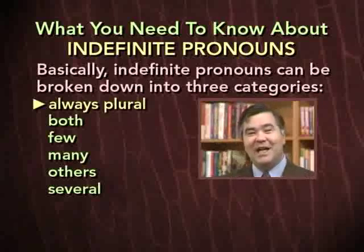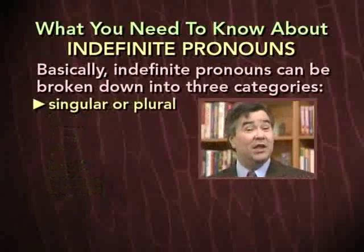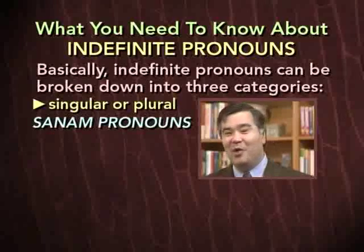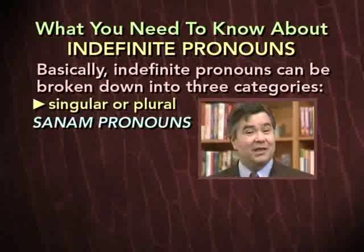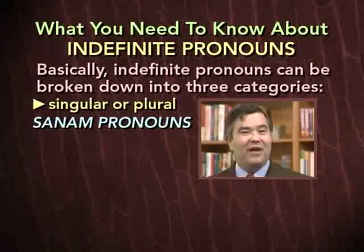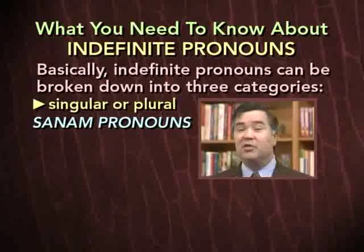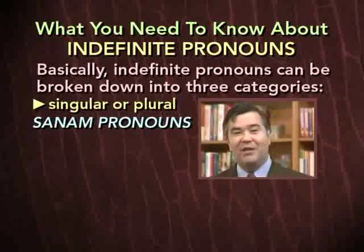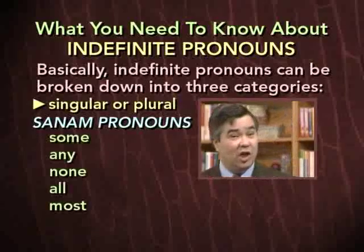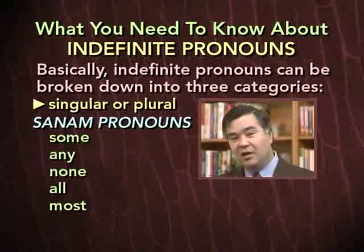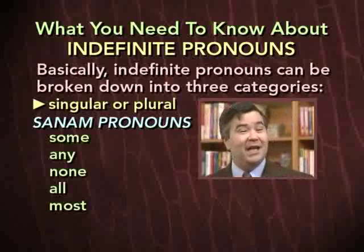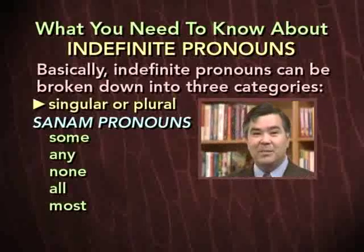Now, here comes the tricky bit. There are five pronouns which may be either singular or plural, depending on how they're used. We call these the SANAM pronouns, because those letters — S-A-N-A-M — are an acronym that reminds us of the five pronouns involved, each letter being the first letter of one of the indefinite pronouns in this category. The five SANAM pronouns are: some, any, none, all, and most. These five pronouns may be either singular or plural, depending on how they're used.